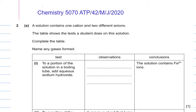In this question number 2, part A, a solution contains one cation and two different anions. Normally in your exams you have one cation and one anion, but here we have two different anions. Positively charged ions are called cations and negatively charged ions are called anions. The table shows the tests a student does on this solution.